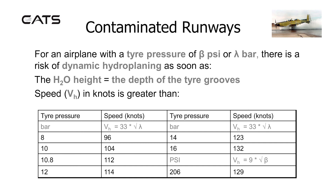Looking at the left hand side of the table with a tire pressure of 8 bar, use the formula with 33 multiplied by the tire pressure in bar. Take the square root of 8 and multiply this by 33 to get 96. If the tire pressure is given in psi, use the other formula: Vh equals 9 multiplied by the square root of the tire pressure in psi. So for a tire pressure of 206 psi, take the square root of 206 and multiply it by 9 to get 129.